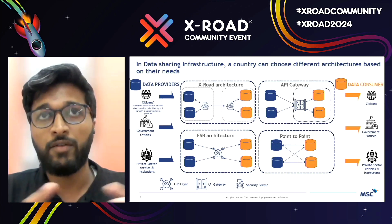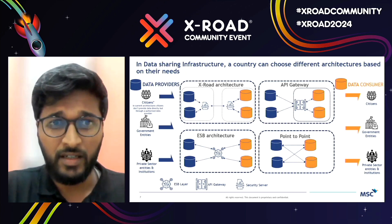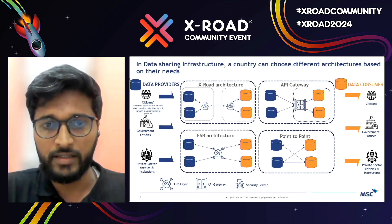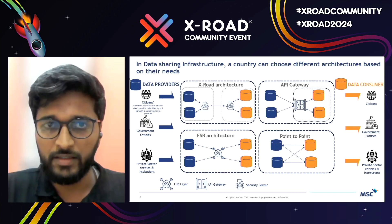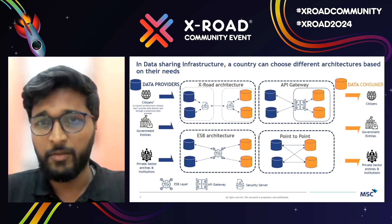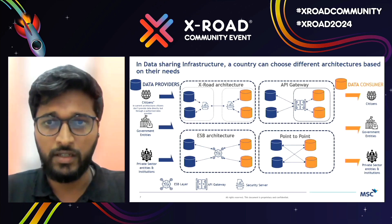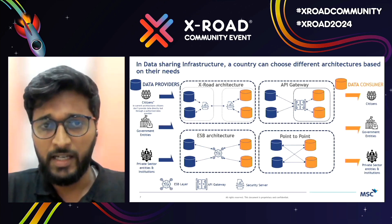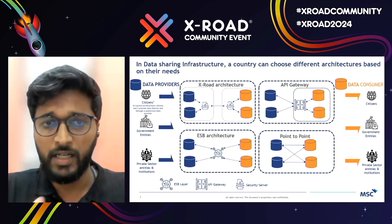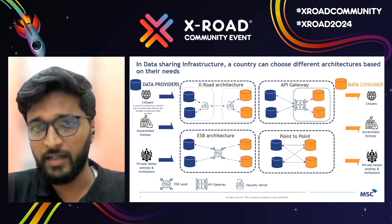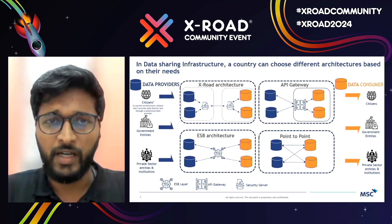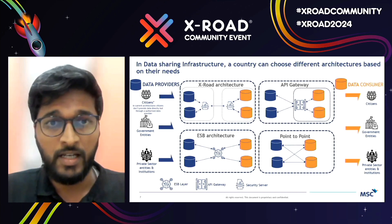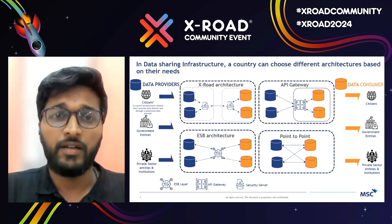Once you have the framework in place for data sharing, trust, and governance, the next step is choosing architecture. The countries we analyzed had four different architectures: XROAD architecture with security servers talking to each other; an API Gateway architecture used by countries like India and Brazil; an ESB bus layer where data consumers and providers talk to a central ESB; and point-to-point architecture. Each has its own advantages and disadvantages depending on the country's use case.